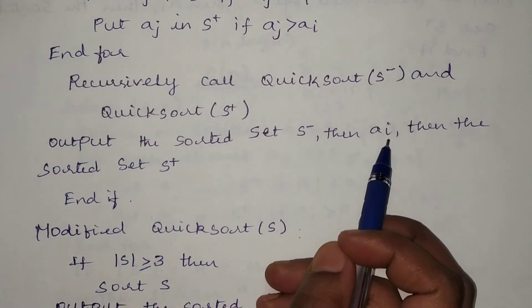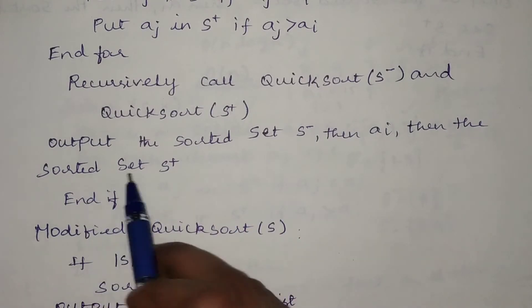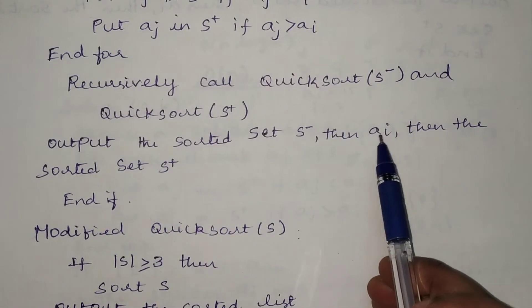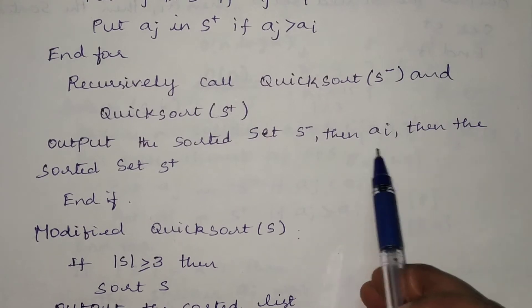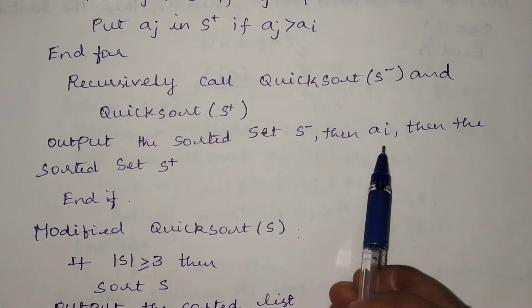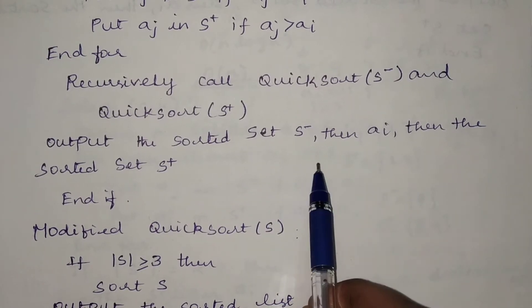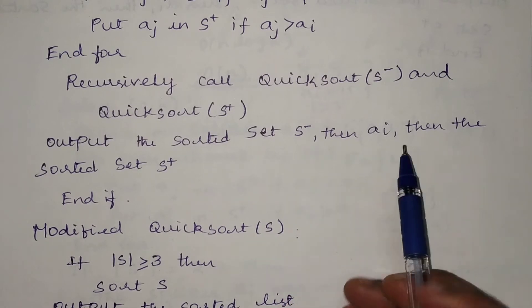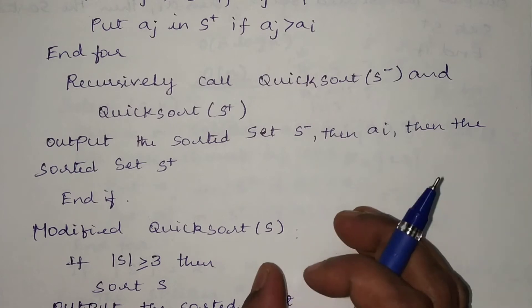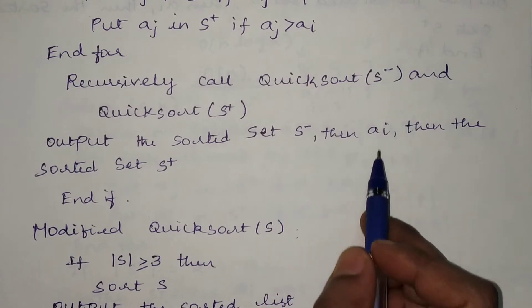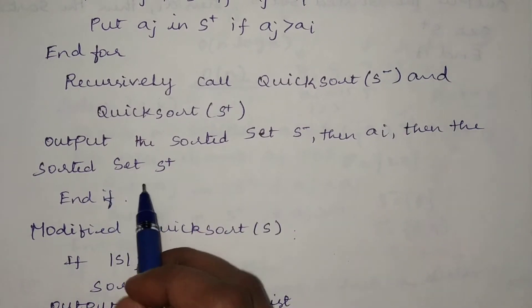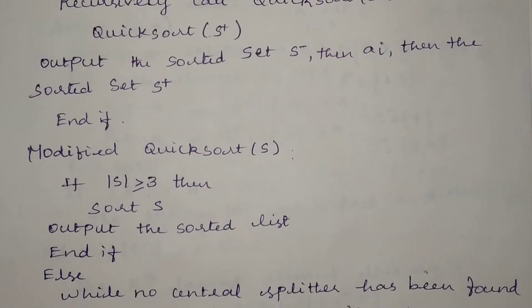Output the sorted set S⁻, then ai, then the sorted set S⁺. The pivot element ai, which was selected to split into two groups, will not be present in either of those two groups, so after sorting you must merge the split groups into a single list and include ai as well.